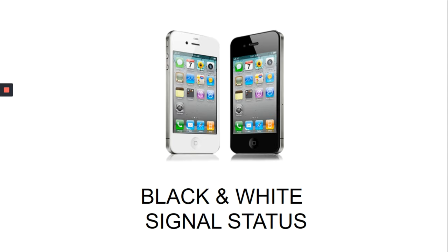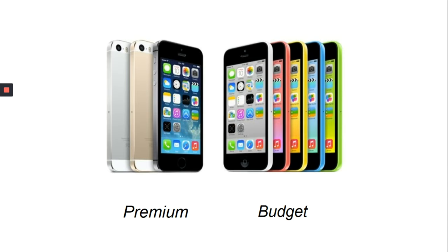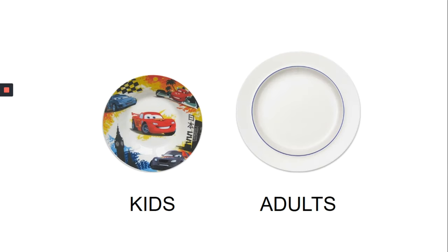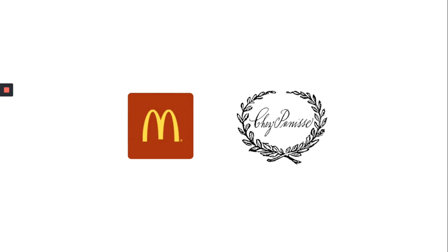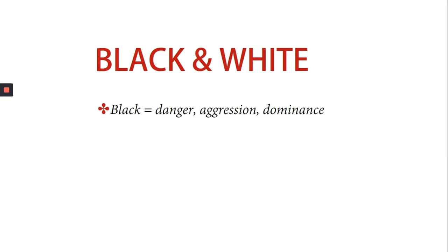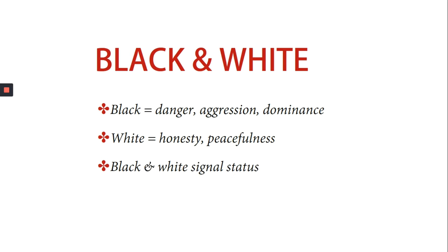Apple used to only have black and white iPhones to signal the status of their owners, and its budget line was very colorful — the message was clear. Black, grey and gold are for a much more professional or higher-status audience compared to the colorful models. You need a lot of colors if you are selling something to children compared to adults. Generally, black means aggression, dominance and danger; white means honesty, peacefulness and submission; and black and white together signals status.